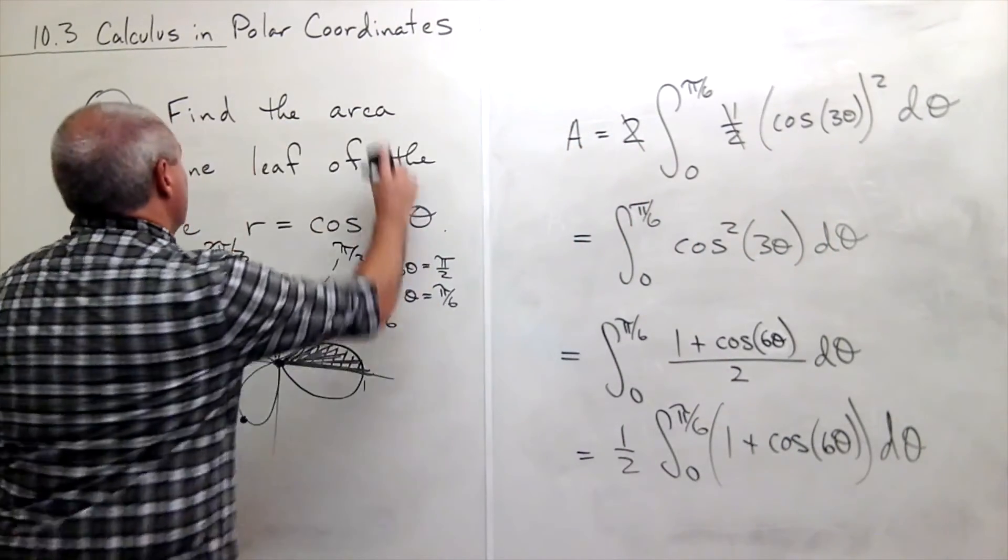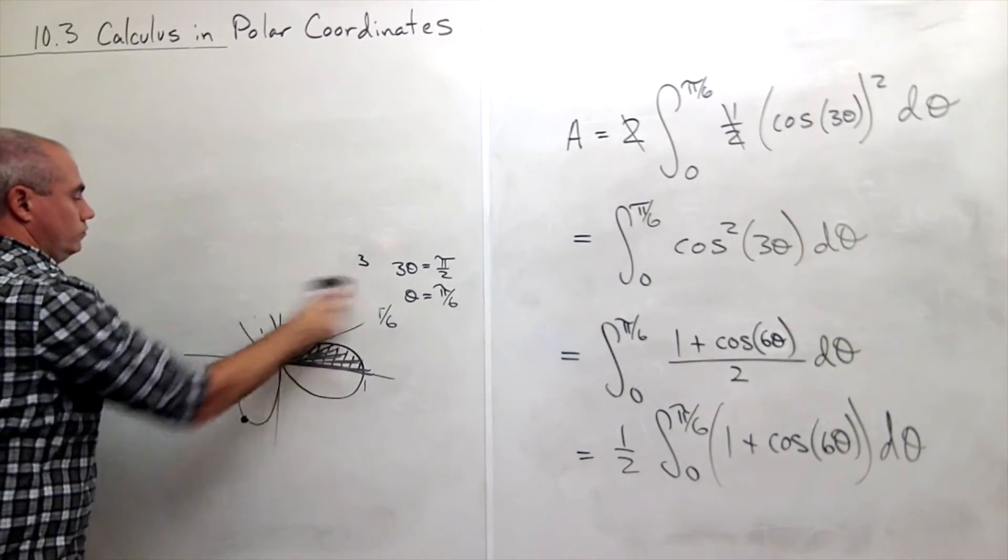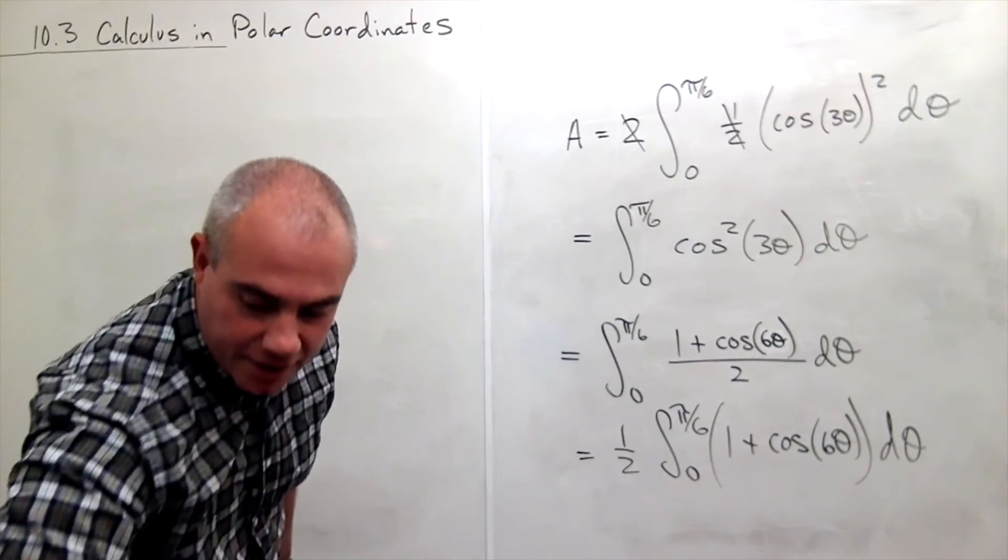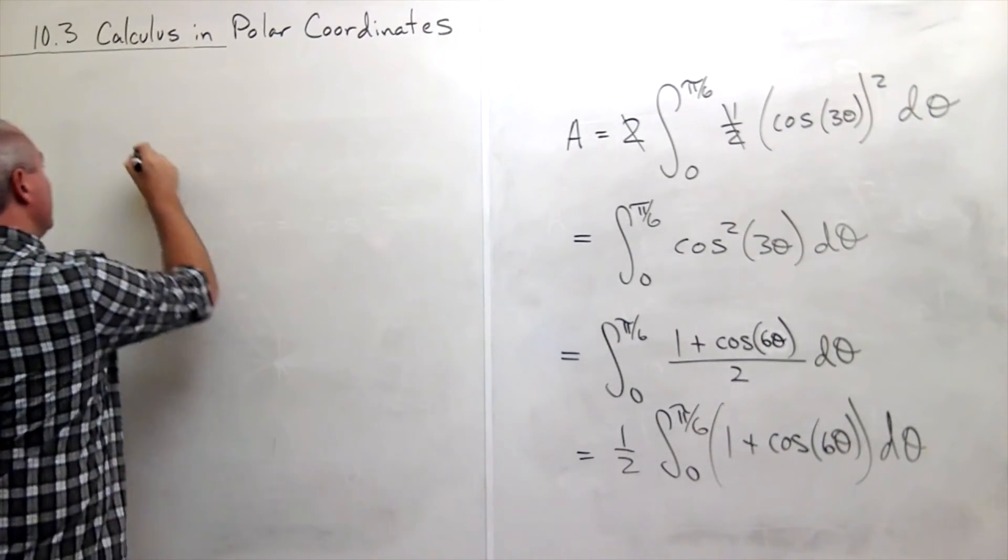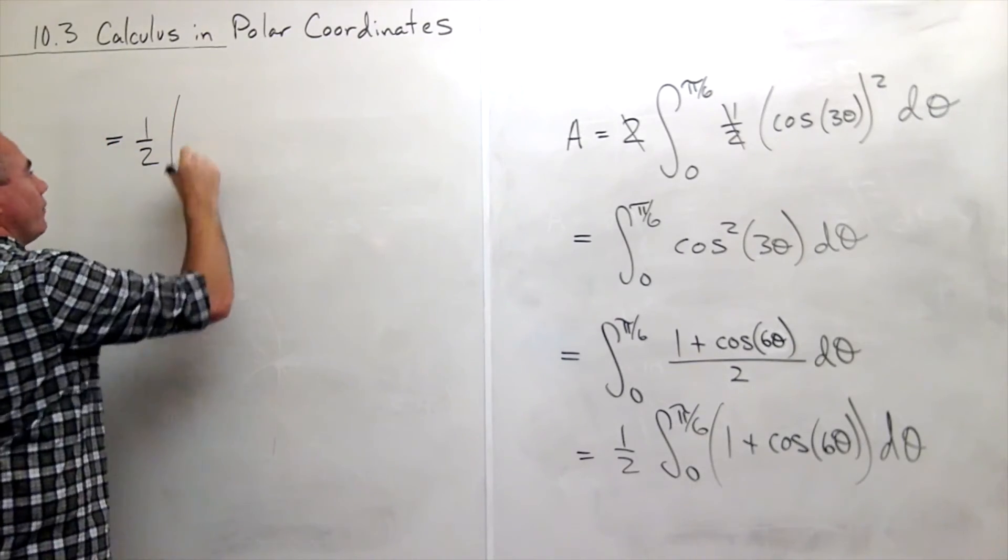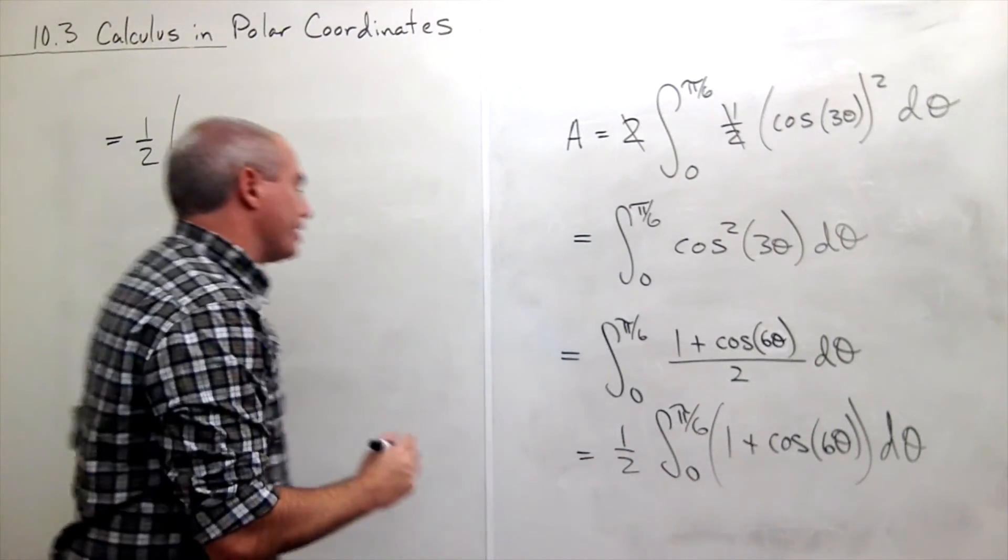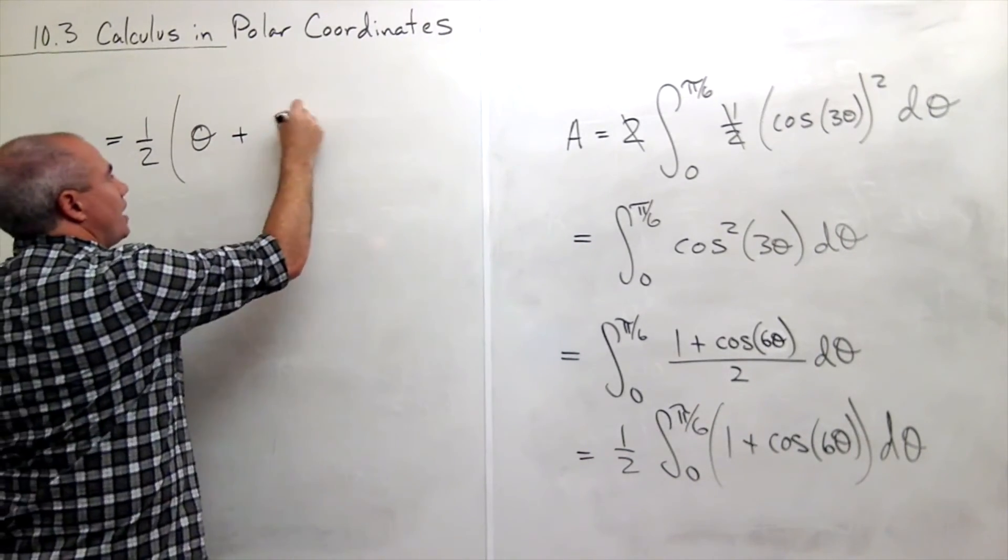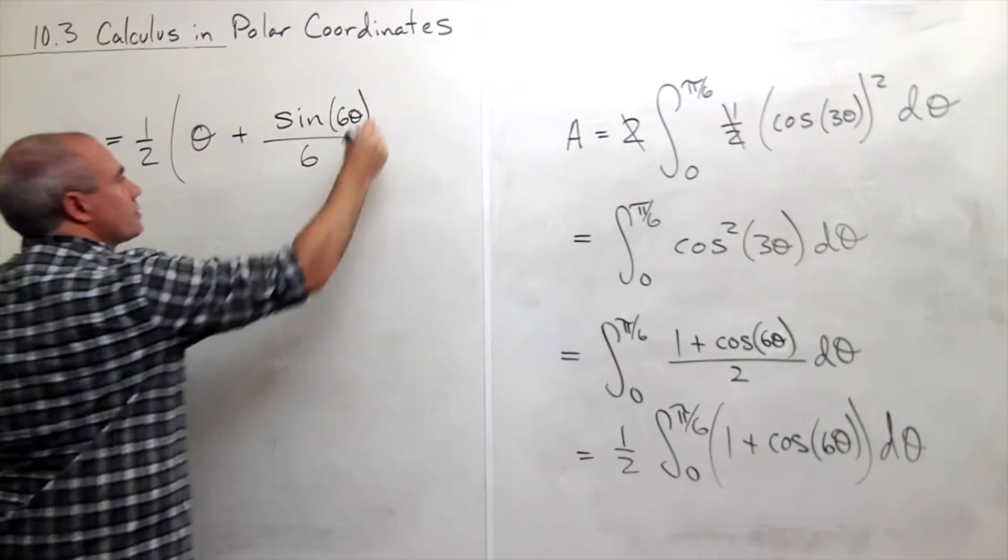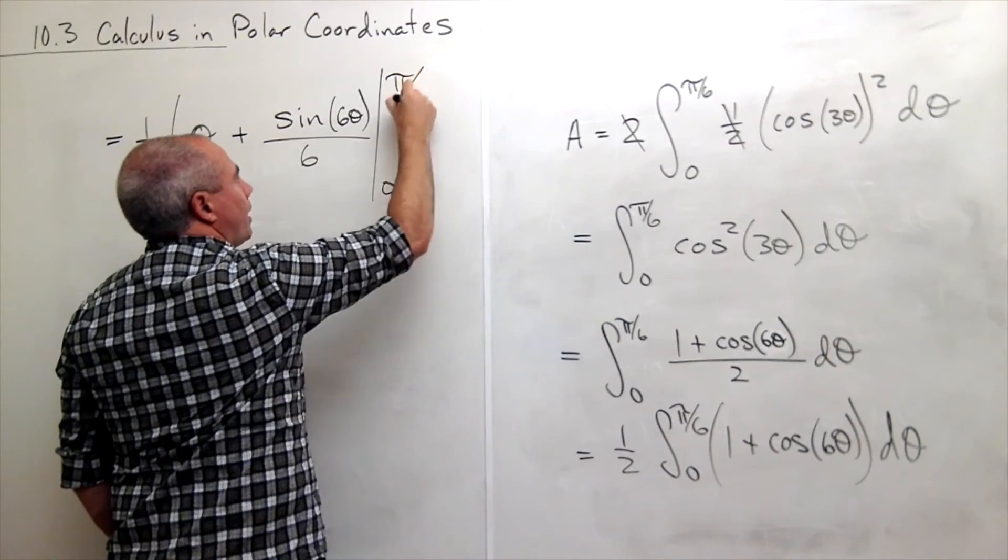All right I'll erase over here. Now let's take an anti-derivative. I have one half. Anti-derivative of one is theta. The anti-derivative of cosine of six theta would be sine of six theta divided by six. All of that evaluated from zero to pi over six.